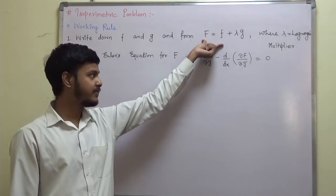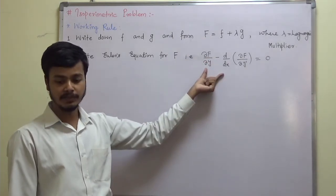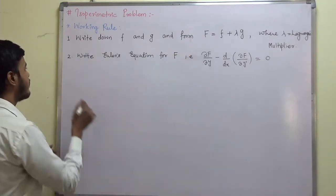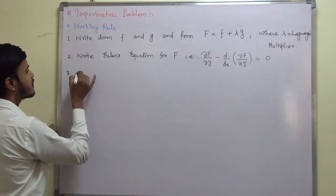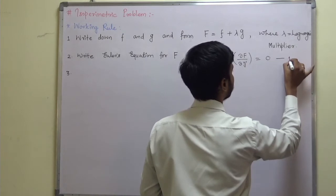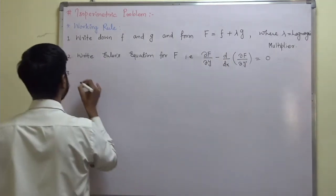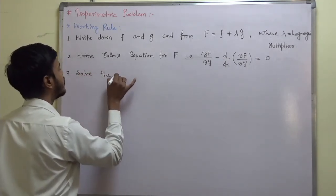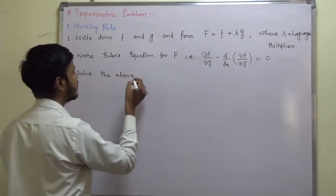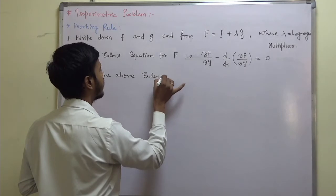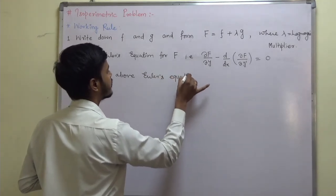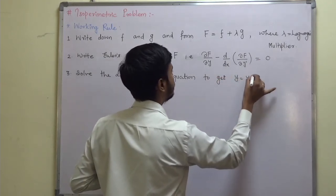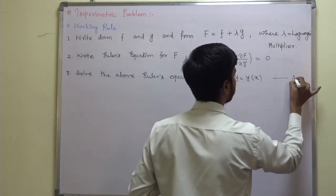Once you have formulated capital F, write down the Euler's equation for this F. The third step is to solve the above Euler's equation to get y as a function of x — call this equation A.